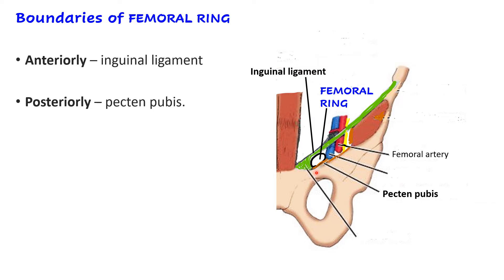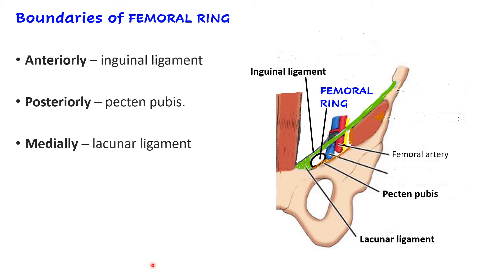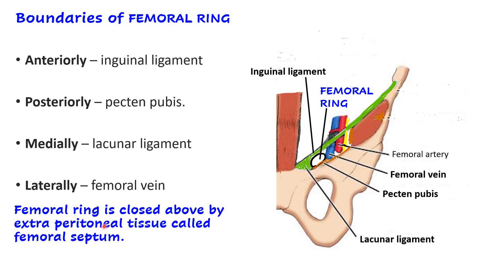The medial boundary of the femoral ring is the lacunar ligament, and laterally it is the fibrous septum of the femoral sheath separating it from the femoral vein. The femoral ring is closed above by extraperitoneal loose areolar tissue forming the femoral septum — not the peritoneum itself, which lies above that. This arrangement is loose enough to allow passage of lymphatics.